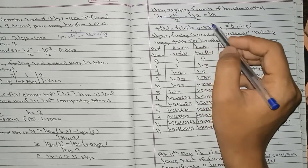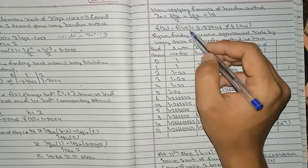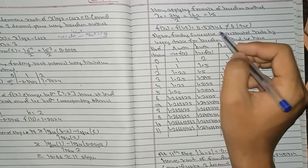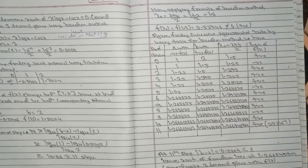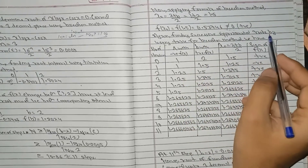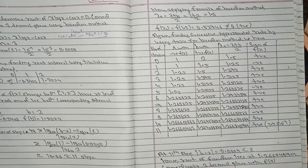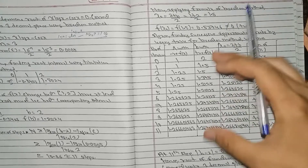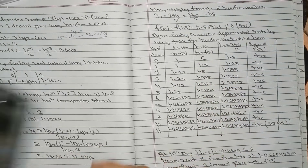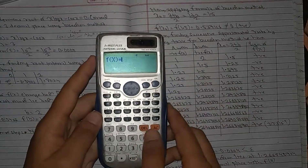Now applying the bisection method formula: x₀ = (a + b) / 2 = (1 + 2) / 2 = 1.5. Putting x₀ = 1.5 into f(x), we obtain a positive value, which is not equal to zero. Now we will find successive estimated roots using a table for the bisection method with the calculator.